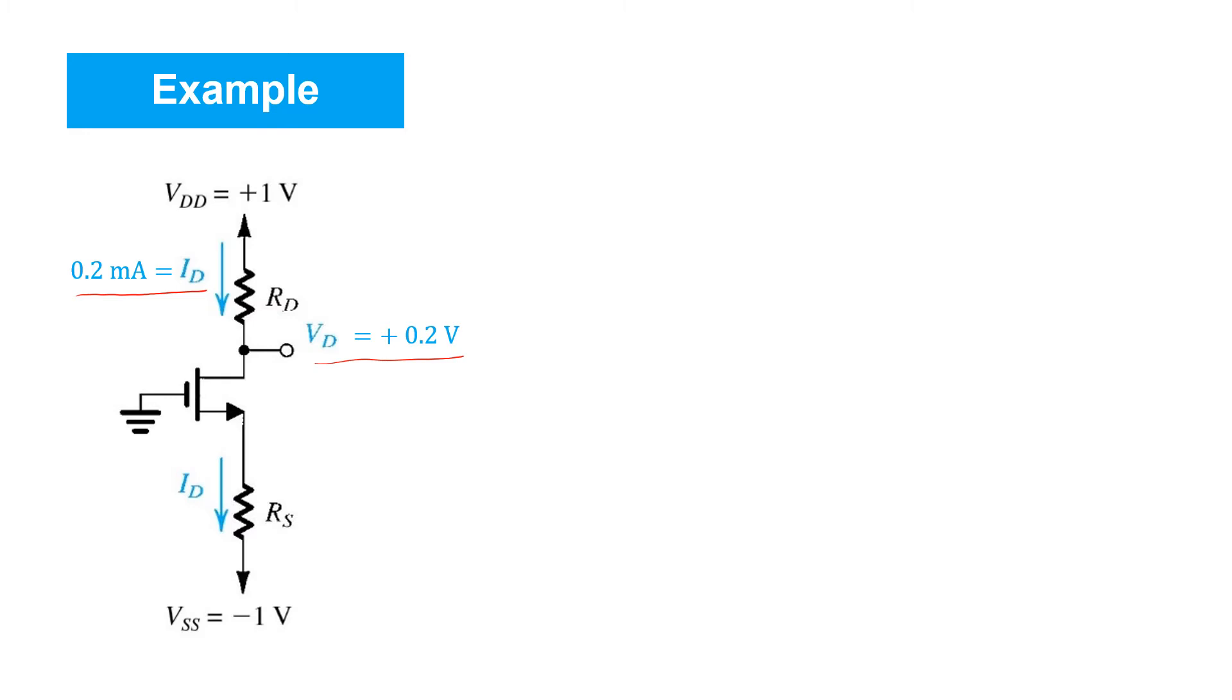So we can get started by finding RD pretty straightforwardly. Just by application of Ohm's law, we know first of all that there's 0.8 volt drop across RD. We know that the current through it is 0.2 milliamps. So RD is simply 0.8 volts over 0.2 milliamps, which is 4 kilo ohms.